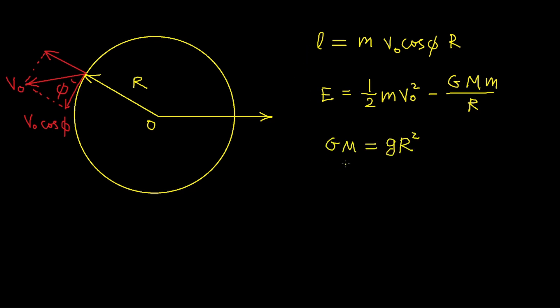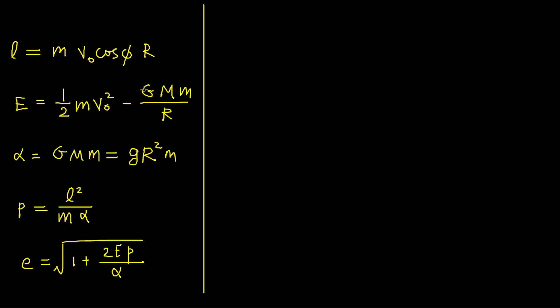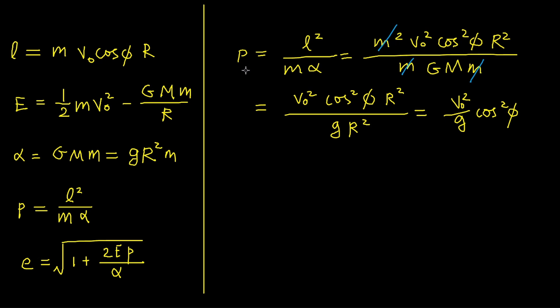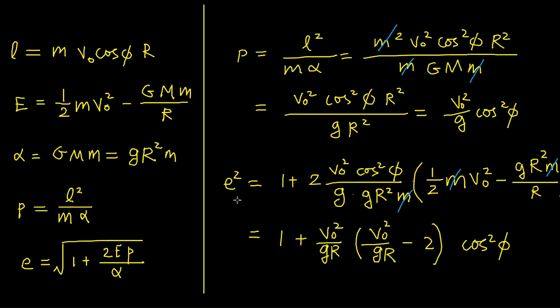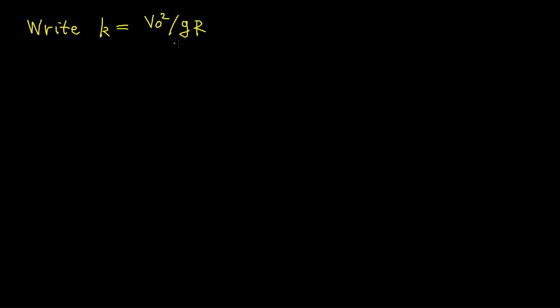We also use the relation GM = g·r², where g is the acceleration due to gravity on the planet's surface. From these relations, we can express p and e in terms of v0 and φ. The result for p is v0²/g · cos²(φ). The result for e² is 1 + (v0²/gr)·(v0²/gr − 2)·cos²(φ). We define k = v0²/(gr), a dimensionless quantity proportional to kinetic energy, so e² = 1 − k(2 − k)·cos²(φ).